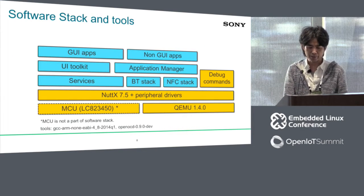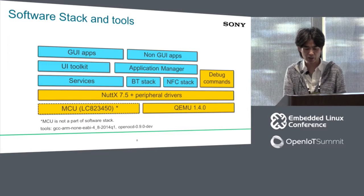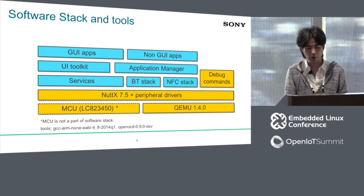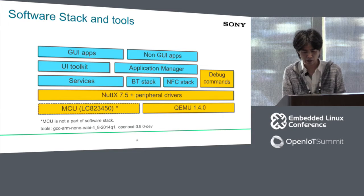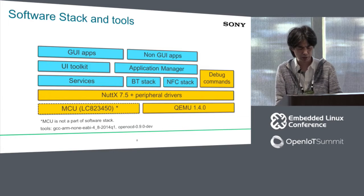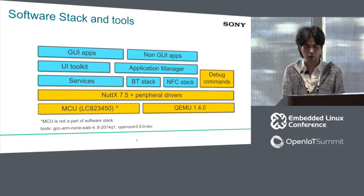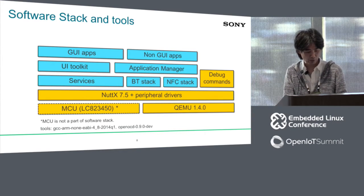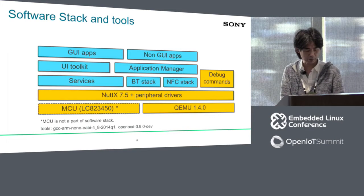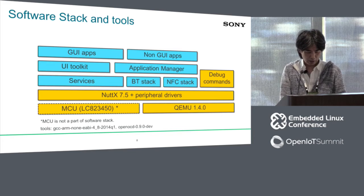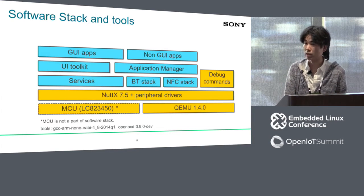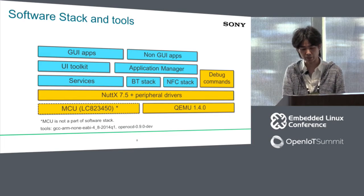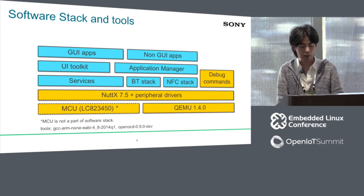This is a very rough software stack which contains several components including applications. For example, QEMU is a CPU emulator used for software porting, while MCU is the actual hardware. As for the operating system, we chose NuttX 7.5 — a slightly older version. Regarding tools, we decided to use GCC 4.8, which supports C++11, and OpenOCD 0.9 in development version, which supports SWD — serial wire debug.